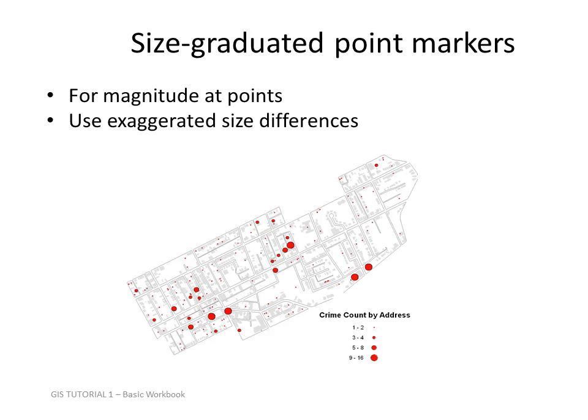Size graduated point markers are used for magnitude at points — more means bigger, bigger means more. Here we can see crime count by address: you've got a large number in some places and less in others.